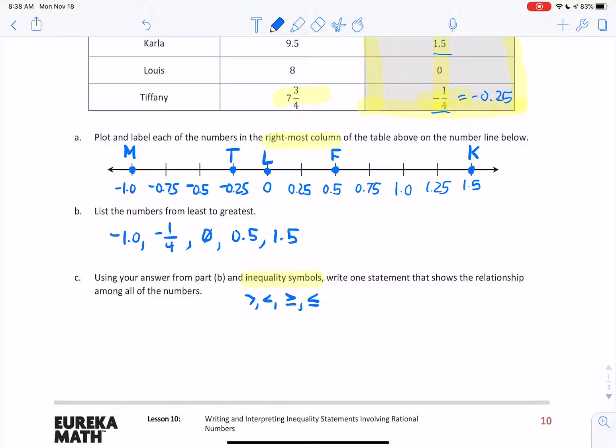Really, the trick here is I know the numbers in order already from question B. I'm going to put those same numbers in order, except since I am going from least to greatest, I'm going to use the less than symbol in between each one.